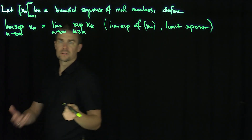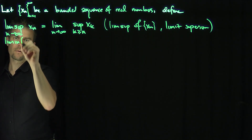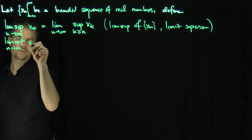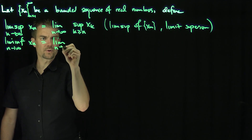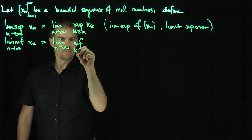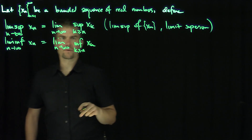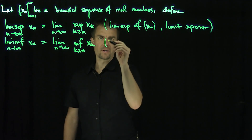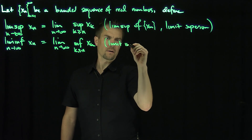Likewise, lim-inf is defined as follows. The lim-inf as n goes to infinity of the sequence xn is the limit as n goes to infinity of the infimum over k greater than or equal to n of xk. This is called the lim-inf, or limit inferior.